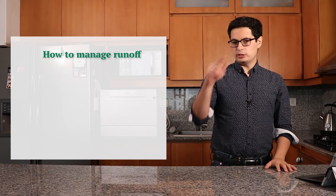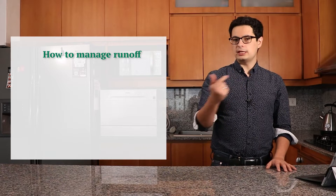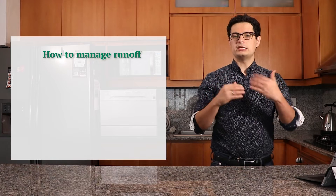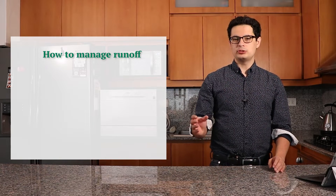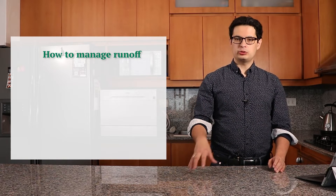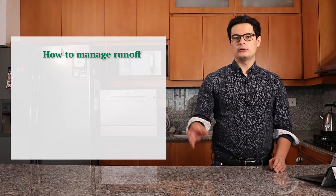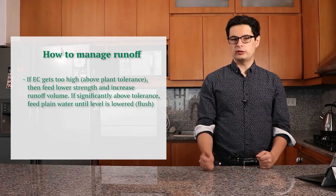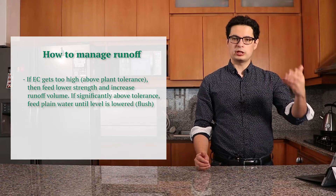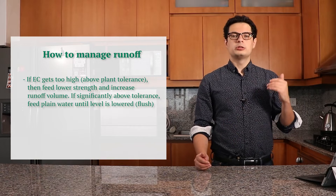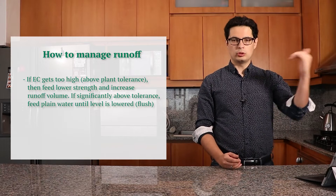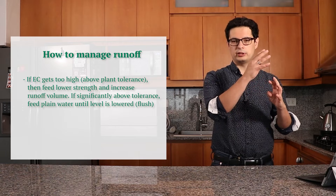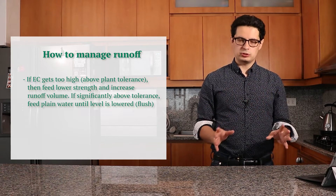If the EC of the runoff increases, that's normal — the EC will normally tend to increase. We can tolerate some increases depending on the plant species. For flowering plants, this value is usually around 3 to 4 millisiemens per centimeter, so we need to ensure the runoff does not exceed these values. If the runoff EC is higher than this, we need to adjust the input EC and increase the runoff volume. By increasing the runoff volume we can flush a lot of the accumulation, but we will waste more nutrients. A more economic and environmentally friendly solution is to lower the EC of the input so that we can lower the EC of the runoff.